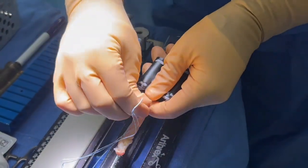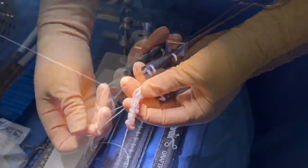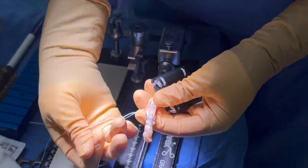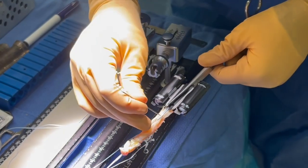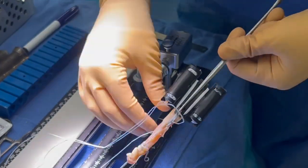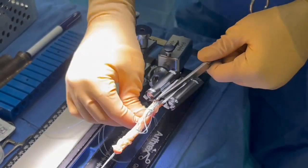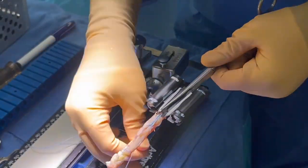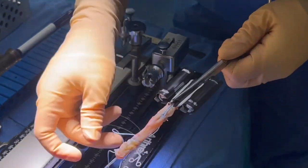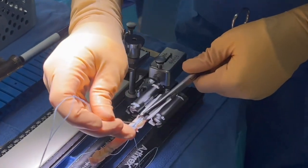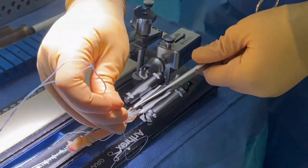You can see here we use the standard Arthrex clamp. We're passing the fiber tape through the quad and then you want repetitive passes through the quad to integrate the tape device in the quad tendon. This is the highest biomechanical strength of any of the quad devices currently out.